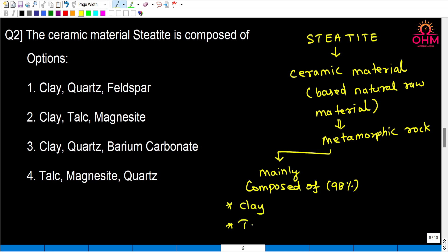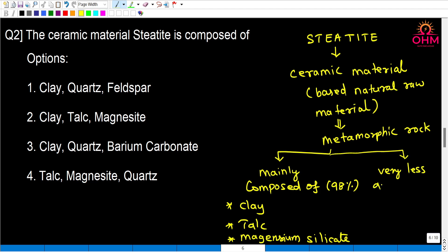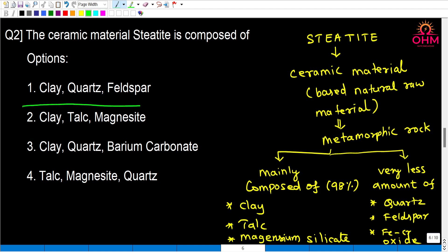— clay, talc, and magnesium silicate, making up about 98 percent. A very small amount — about 2 percent — consists of quartz, feldspar, and iron chromium oxide. From this, the best option is 2, because magnesite is the main source of magnesium silicate. So choice 2 is the correct answer.